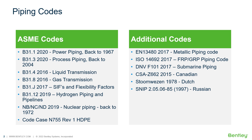We have B31-J for the SIFs and flexibility factors. And B31-12 for hydrogen piping and pipelines. We also include code case N755-1 for HTPE piping.